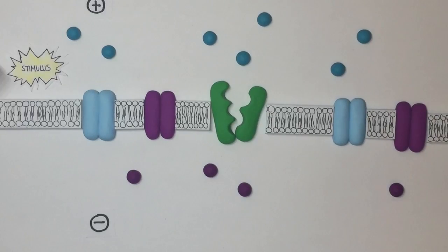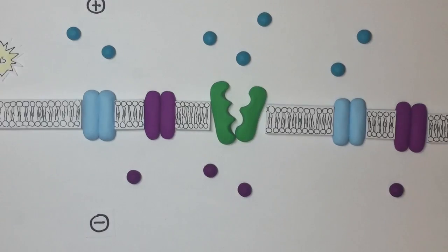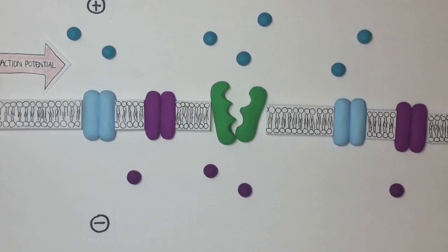Now when a neuron is stimulated, which we will go into more detail about later, there is a local depolarization. And when the depolarization crosses the threshold of about negative 55 millivolts, an action potential will be fired and spread along the axon.